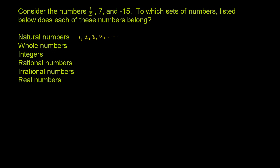We'll assume that the whole numbers are essentially the natural numbers plus 0. So the whole numbers are 0, 1, 2, 3, 4, so on and so forth.